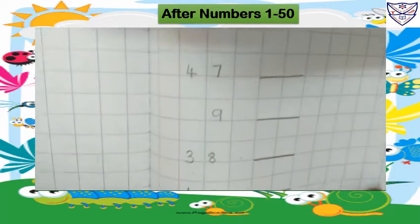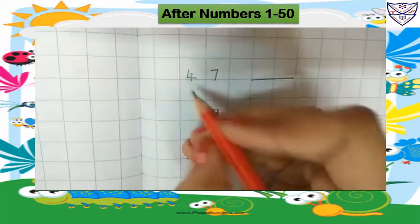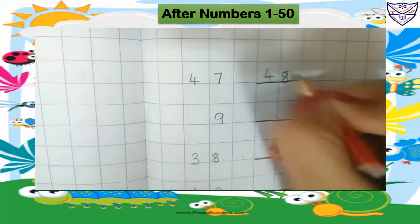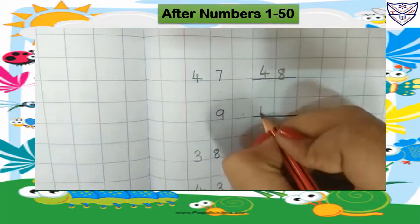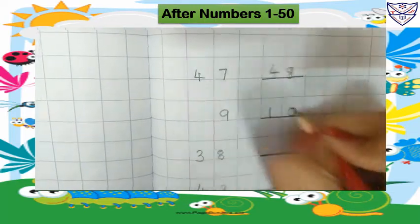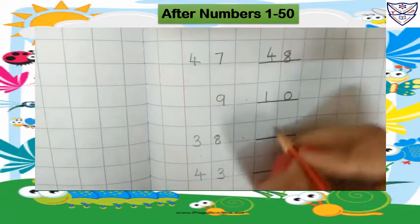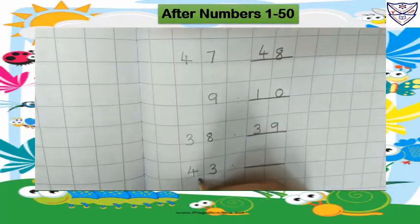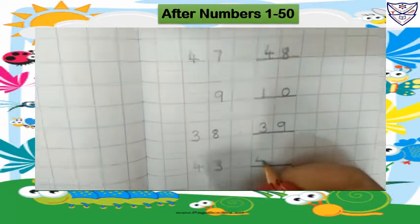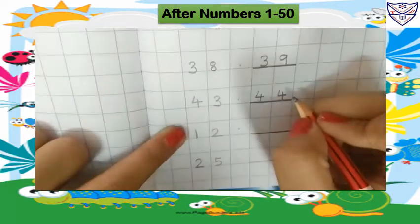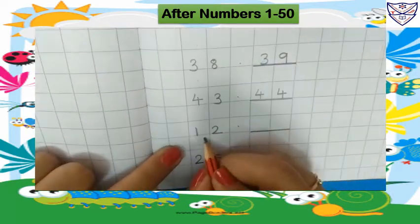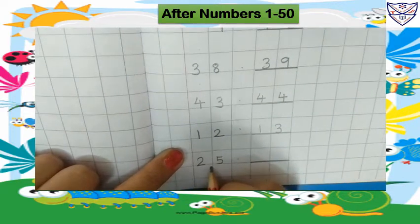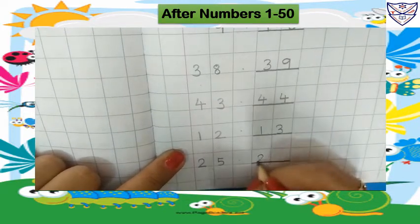Next page. What will come after 47? 48. So we will write here 48. What will come after 9? 10. So we will write 10. What will come after 38? 39. So we will write 39. What will come after 43? 44. What will come after 12? 13. What will come after 25? 26.